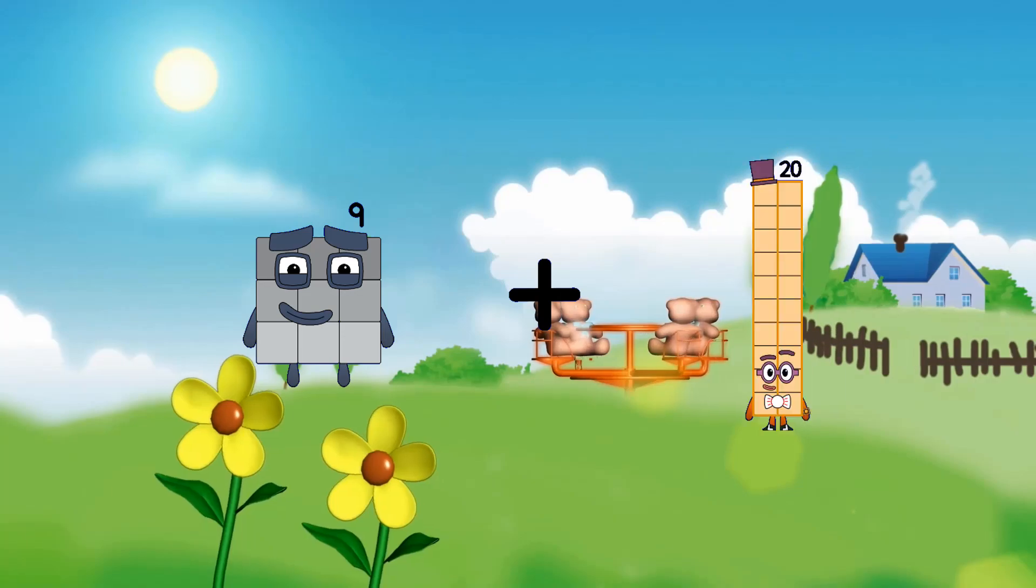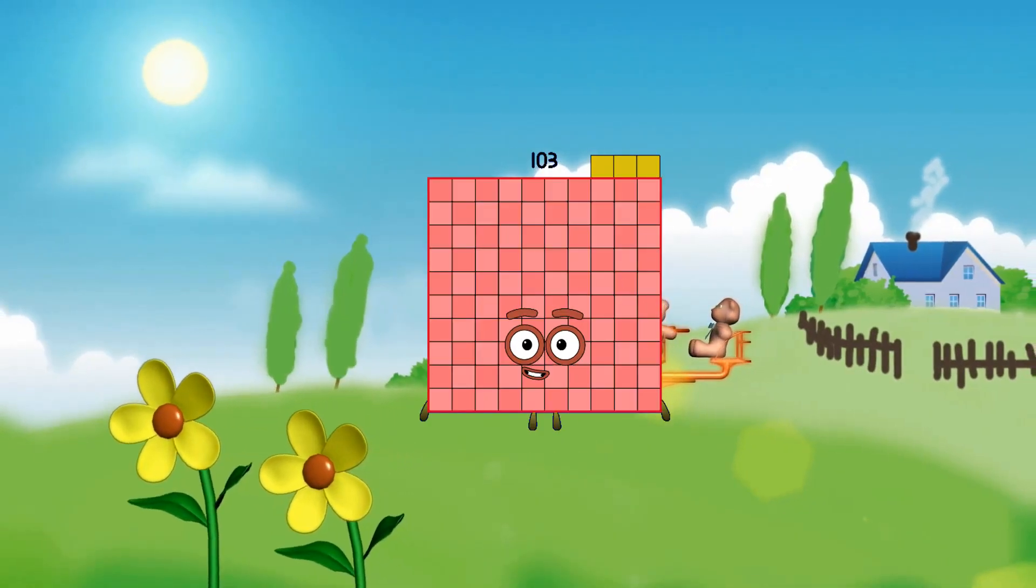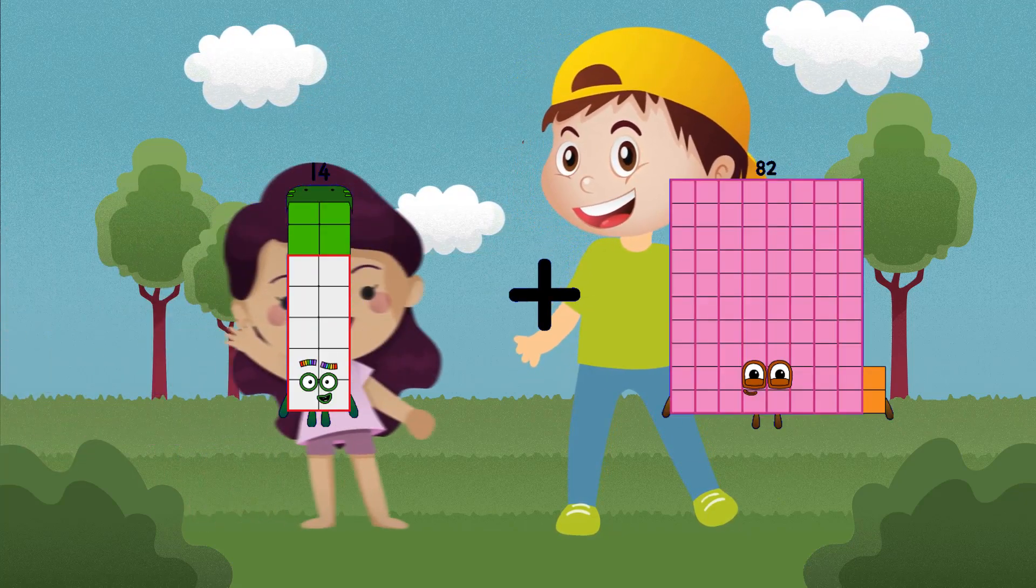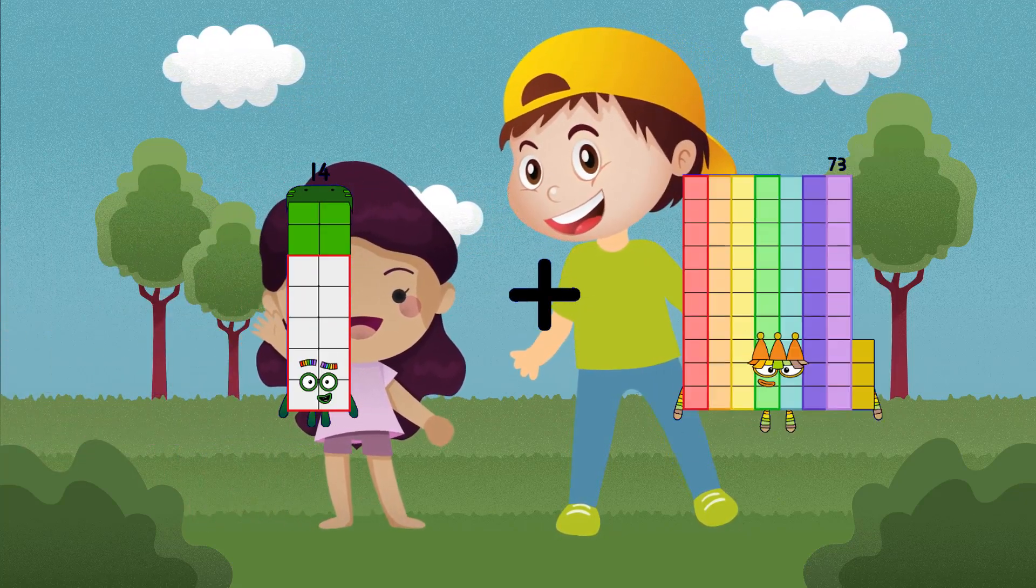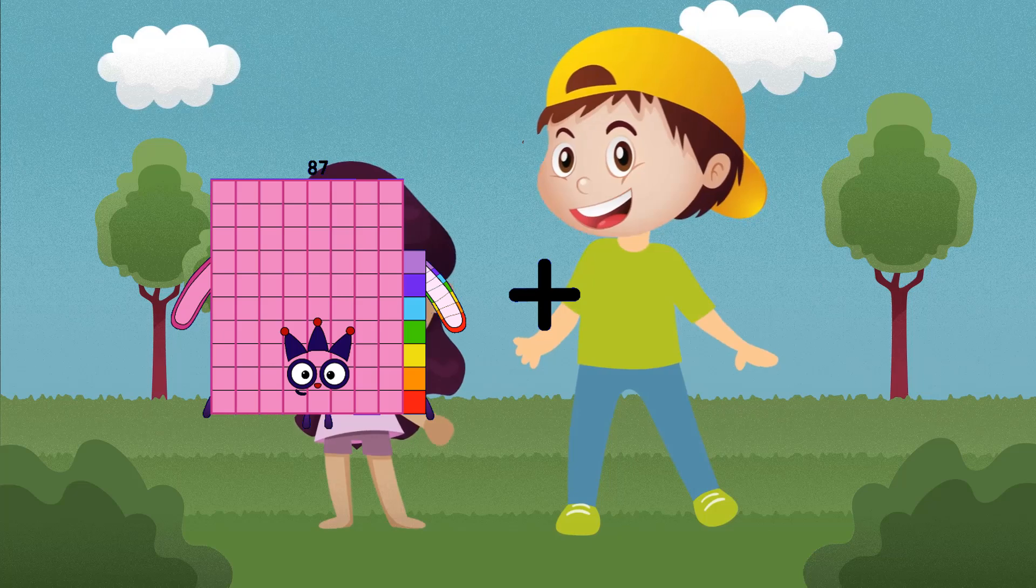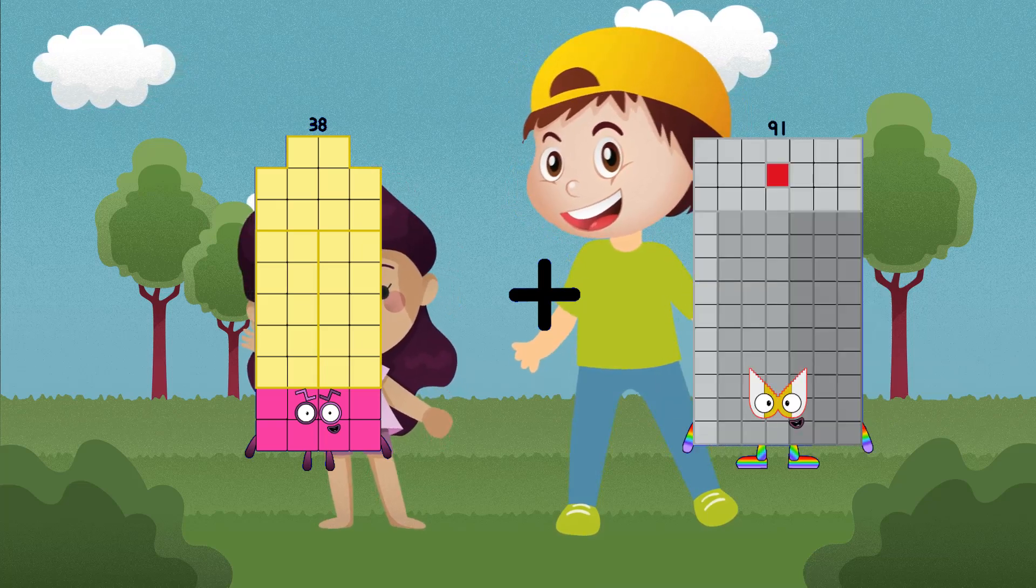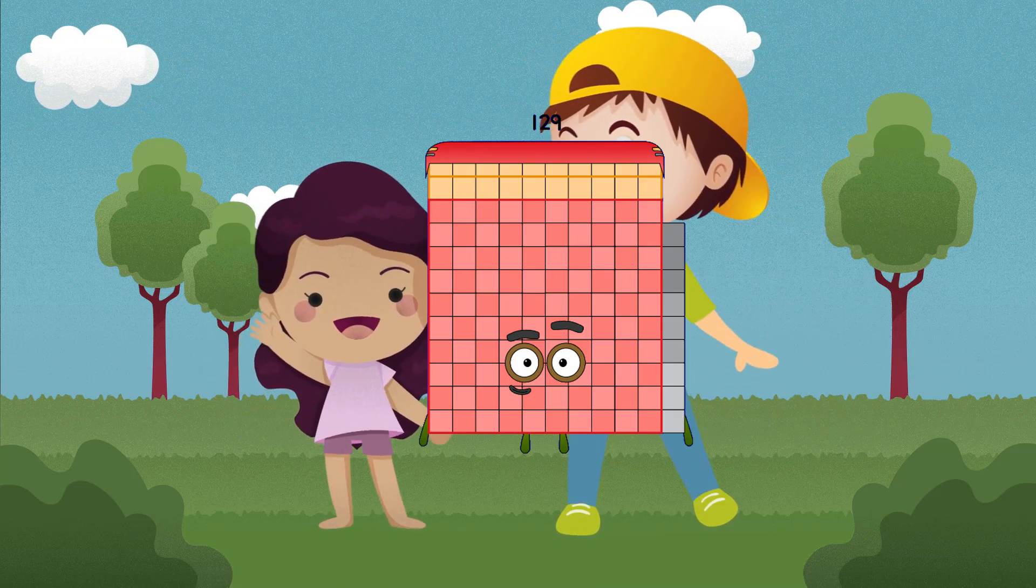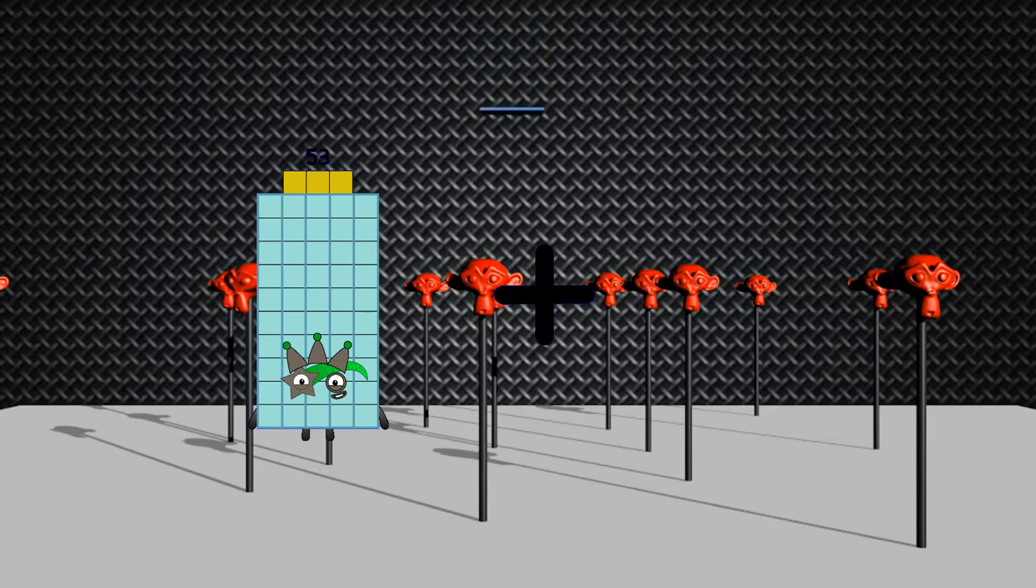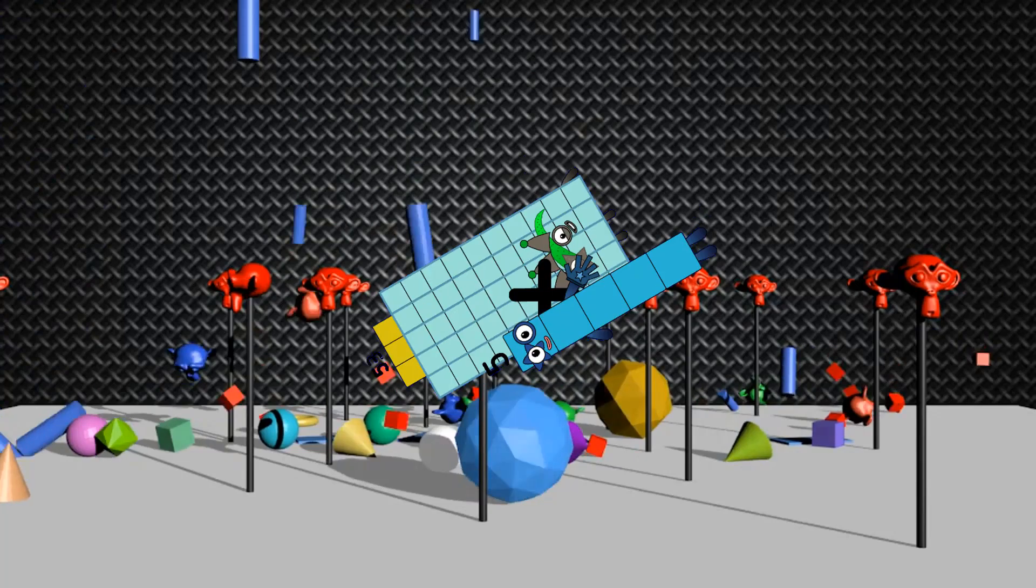Nine plus ninety-four equals one hundred three. Fourteen plus forty-one equals fifty-five. Thirty-eight plus ninety-one equals one hundred twenty-nine. Fifty-three plus five equals fifty-eight.